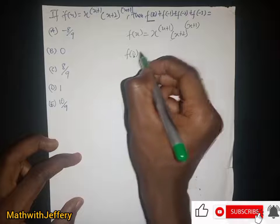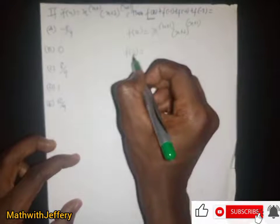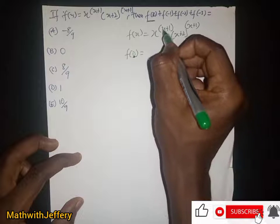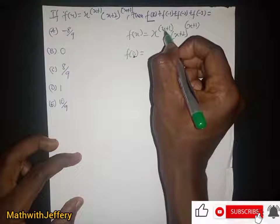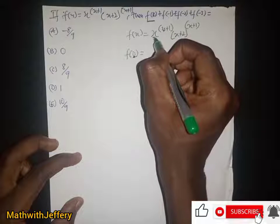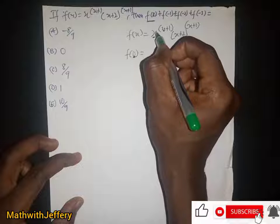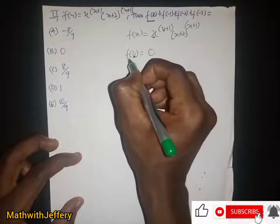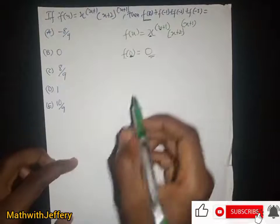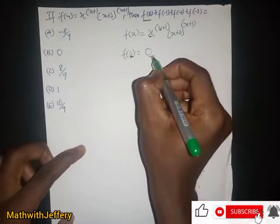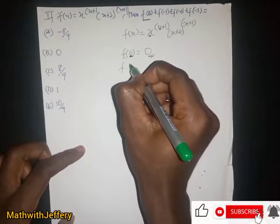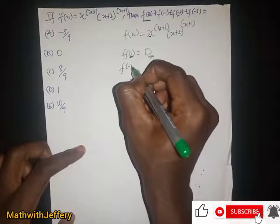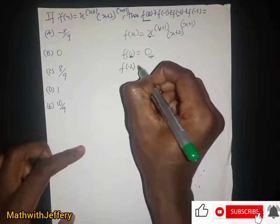When we take f(0), s is equal to 0. When s equals 0, we realize that we have 0 here and therefore 0 here as well. So this goes to 0 and everything goes to 0. So f(0) equals 0.